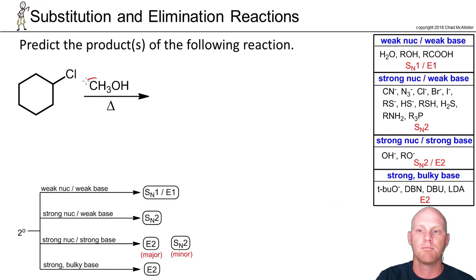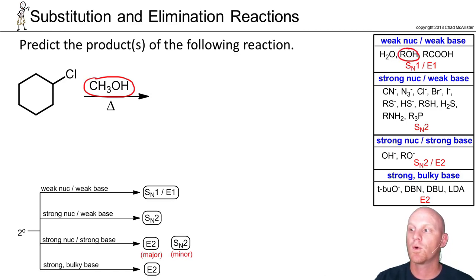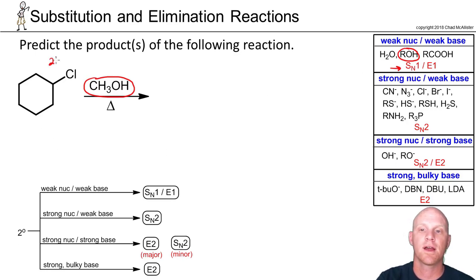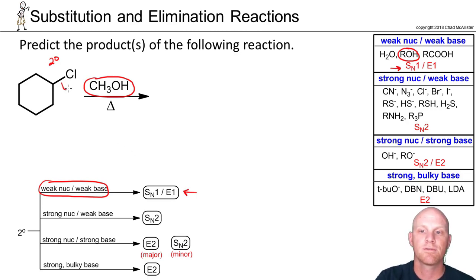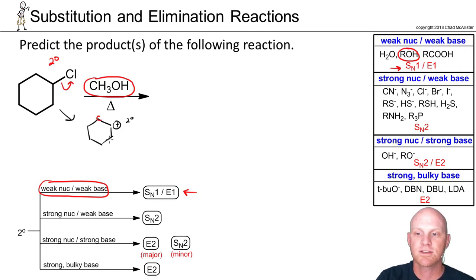Example 1: methanol is our nucleophile or base. Methanol is just an alcohol — a weak nucleophile and a weak base — so we should lean toward both SN1 and E1. Our halide is a secondary halide, and with a weak nucleophile, weak base, and a secondary halide, SN1 and E1 are going to compete. When doing SN1 and E1, first show the carbocation that forms to check for rearrangements. Here we have a secondary carbocation, and neither adjacent carbon is better, so no rearrangements to worry about.